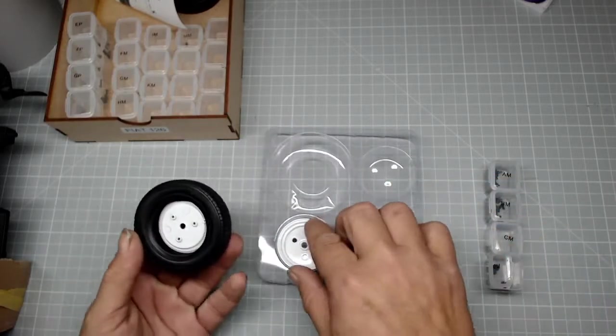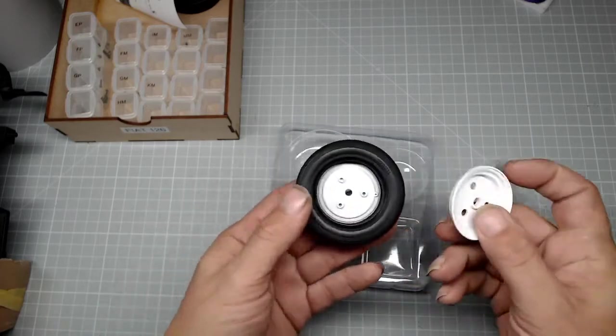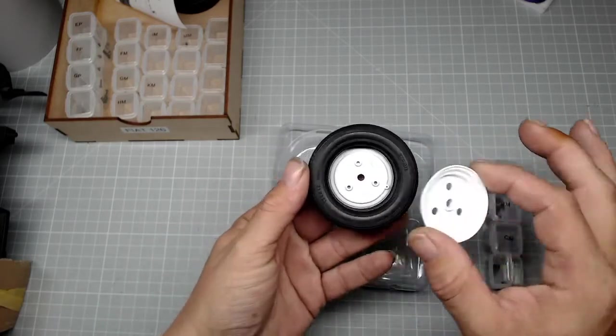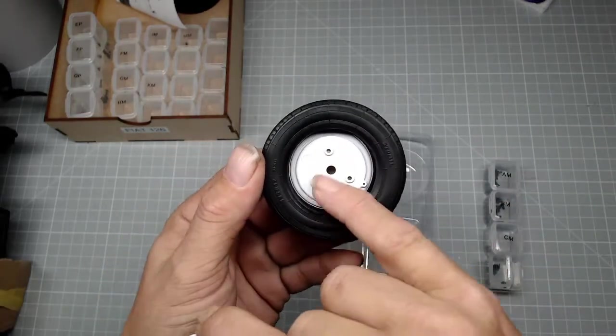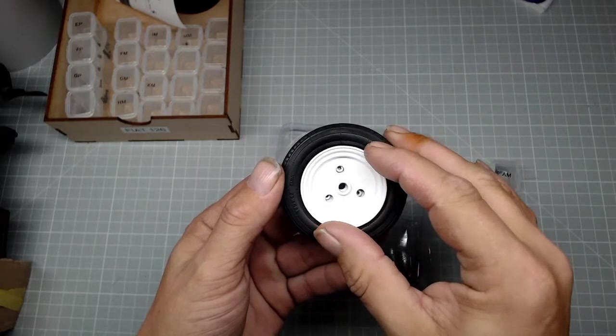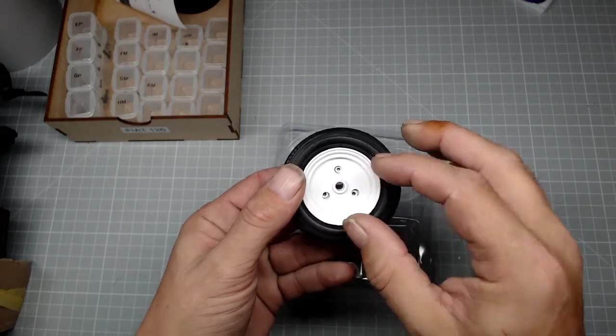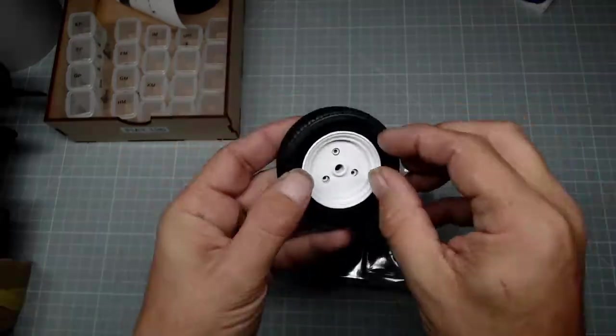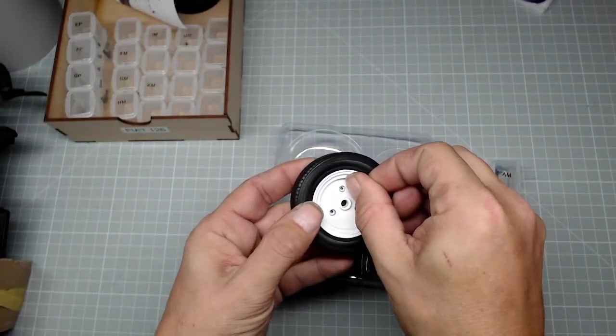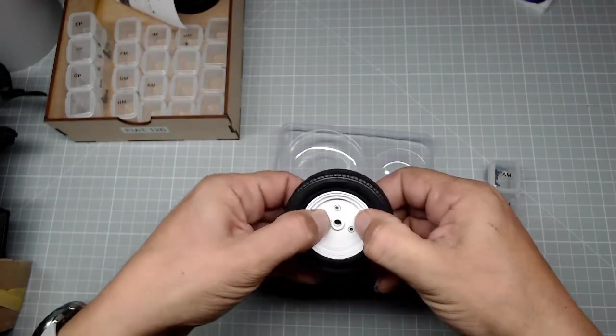And then we're going to take piece 31B. Now the trick here is, you can see you've got the three lines there, three holes, sorry. You need to just line that up so that they fit in. See that one's slightly off, you just need to position that around, and there we go.